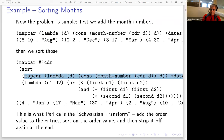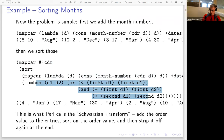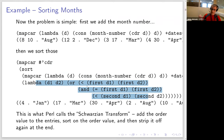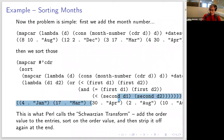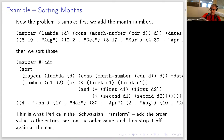The sort function sorts first by the month entry and then by the date entry. After sorting, I use mapcar again to strip away the month number, leaving just the original date strings. And it works — I now get 4th of January first, then 17th of March, 30th of April, August later, and so on. This is an example of using mapping to generate extra data, sorting on it, and then stripping it away.